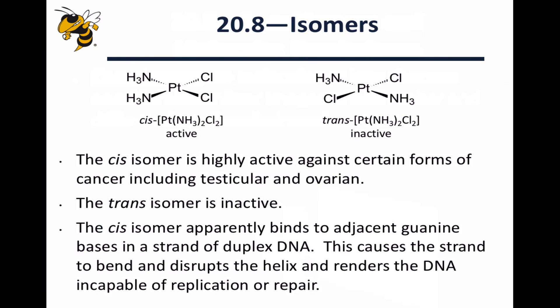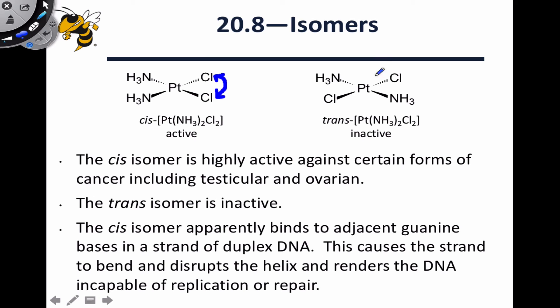In general, diastereomers have different physical properties because they have different internal distances between atoms in their structures. In the example shown here, the two chlorines are closer to one another in the cis isomer than in the trans isomer. This means we should expect different dipole moments, different melting and boiling points, and different reactivity.